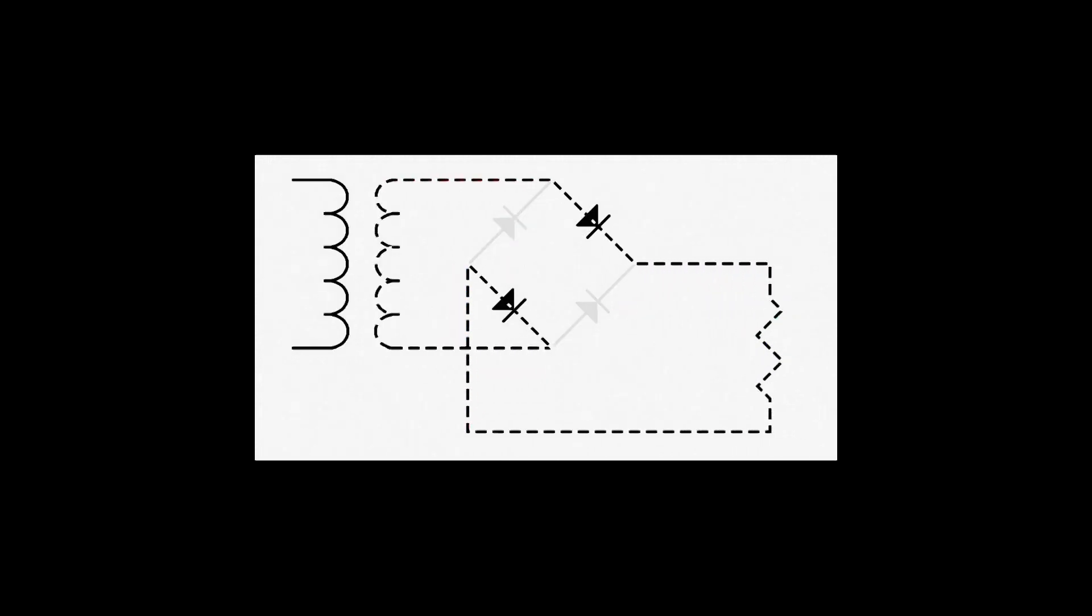Current flows through the load resistor in this direction. We always have our higher voltage where conventional current enters an impedance, such as a resistor, so the positive voltage will be here. We always have our lower voltage where the current exits an impedance, so the negative voltage will be here.